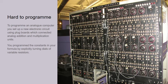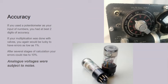You programmed the constants into the formula using dials. You turned them to the constant you wanted and these dials operated variable resistors. Now if you're using a potentiometer as your input of numbers, you had at best two digits of accuracy if it was a really good potentiometer. And if your multiplication was going to be done using valve amplifiers, you'd be lucky if your accuracy was within one percent. Once you'd fed it through several stages of computation, you might get errors as high as 10 percent, primarily because analogue voltages were all subject to noise.